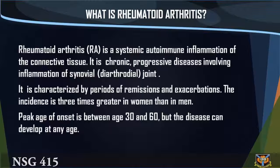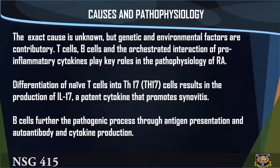RA is a chronic progressive disease involving inflammation of the synovial joint. It is characterized by periods of remissions and exacerbations. The incidence is three times greater in women than in men. Peak age of onset is between 30 and 60, but the disease can develop at any age. The exact cause is unknown, but genetic and environmental factors are contributing.